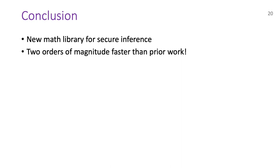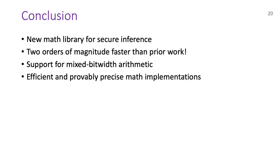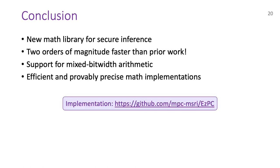In conclusion, we created a new math library for secure inference that is 2 orders of magnitude faster than prior work. It has support for mixed bitwidth arithmetic, and the corresponding 2PC building blocks are of independent interest. Our math implementations are efficient and provably precise, and can be used in non-RNN contexts. Our code is publicly available on GitHub, and I hope you enjoy reading our paper. Thank you for your attention.